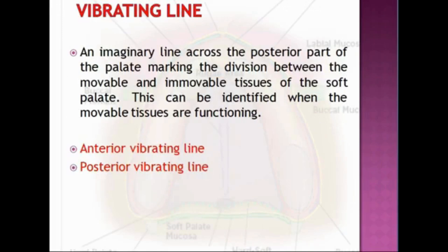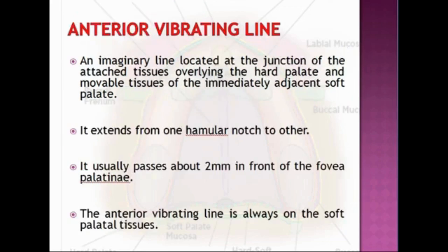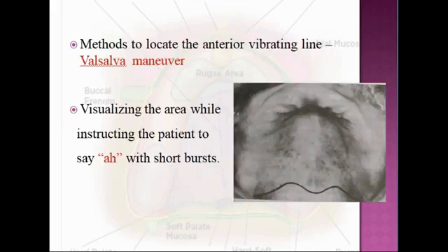The anterior vibrating line is an imaginary line located at the junction of the attached tissues overlying the hard palate and the movable tissues of the immediately adjacent soft palate. It is recorded in the patient by performing the Valsalva maneuver and also by instructing the patient to say 'ah' in short vigorous bursts. The anterior vibrating line is also on soft palatal tissues.